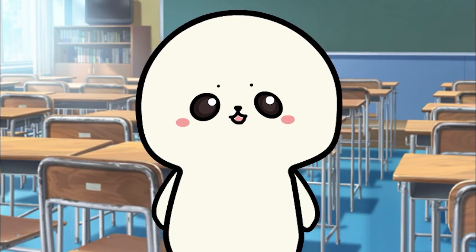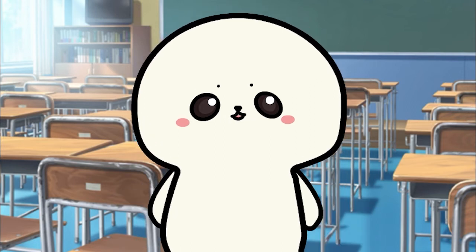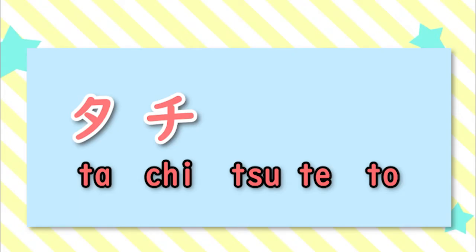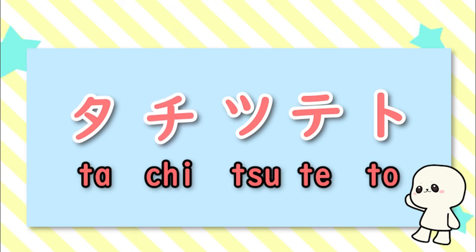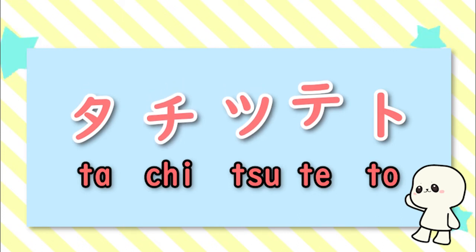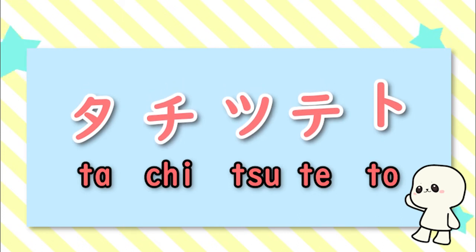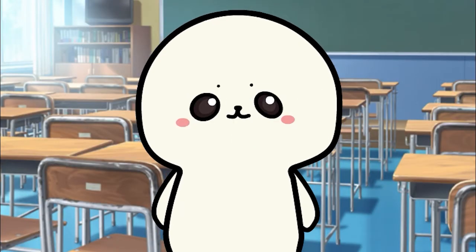Today's katakana are: た、ち、つ、て、と. How to read them?